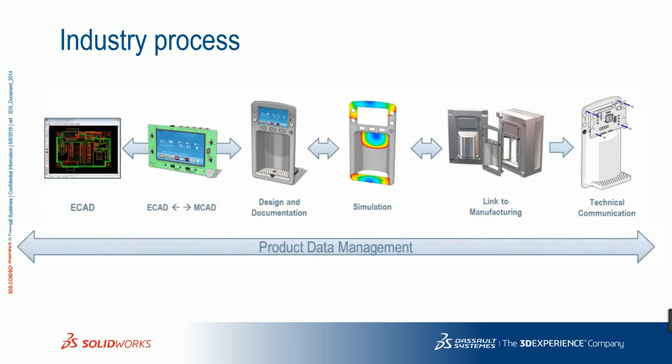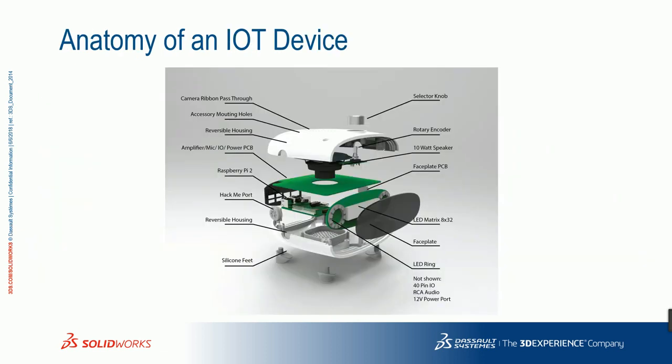The common industry process starts with electrical designs such as 2D layouts, then integrating those with the mechanical department for accurate design and documentation. Once the design is done, simulation is used to ensure whether the product is capable of manufacturing. After that it goes to manufacturing, followed by technical documentation. SOLIDWORKS provides various solutions to complete all these processes in the shortest time.